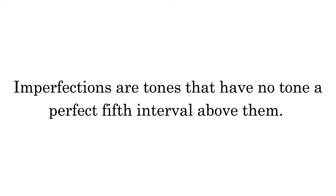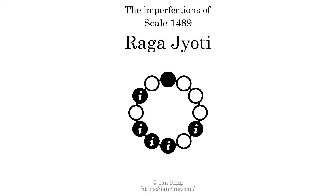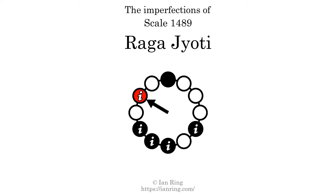Imperfections are tones that have no tone a perfect fifth interval above them. This scale has 5 imperfections. They are at positions here, here, here, here, and here.